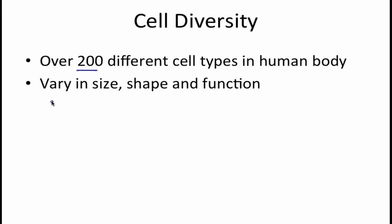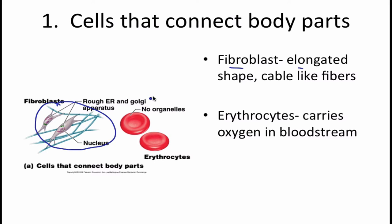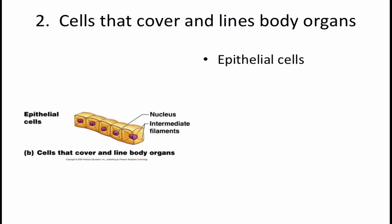There are over 200 different types of cells in the human body that vary in shape, size, and function. The first type connects body parts — a fibroblast is an example, with an elongated shape and cable-like fibers. Another connecting cell is the erythrocyte, which carries oxygen in the bloodstream, has no organelles, and in fact a mature erythrocyte or red blood cell doesn't even have a nucleus.